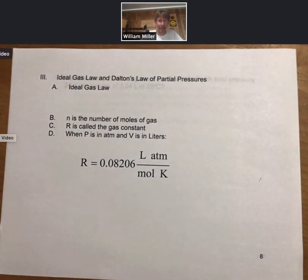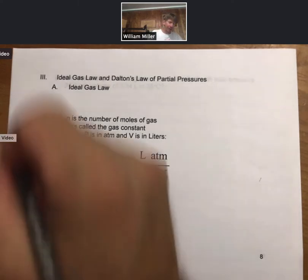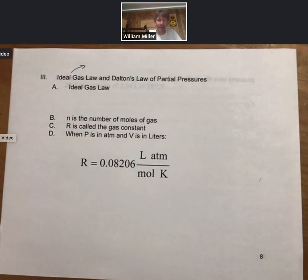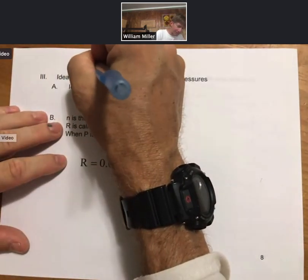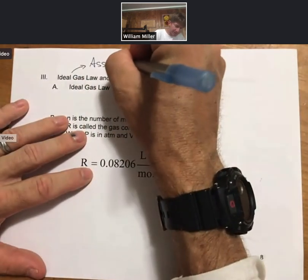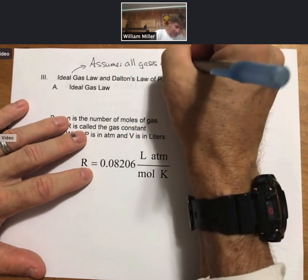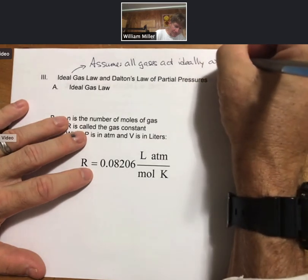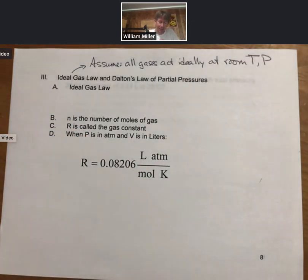So what those were, the fact that the ideal gas particles had zero volume and that each particle had zero attraction to other particles or the wall. What I would like to say right now is that in this class all gases act ideally unless we tell you otherwise. So assume all gases act ideally at room temperature and pressure.